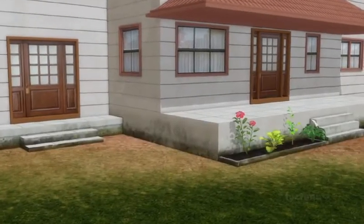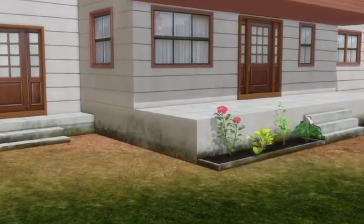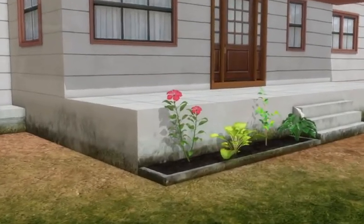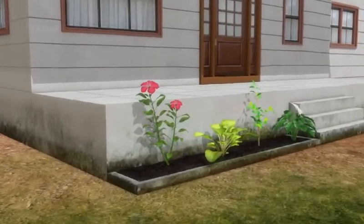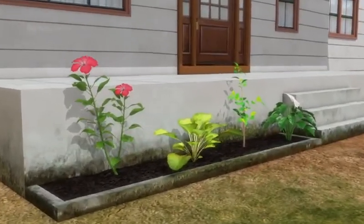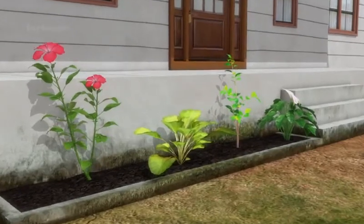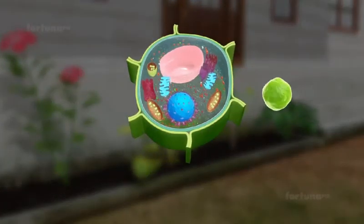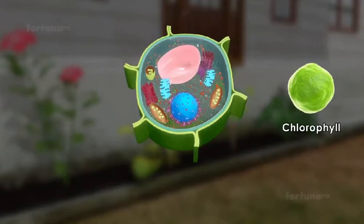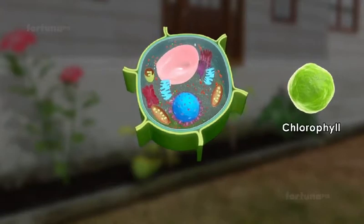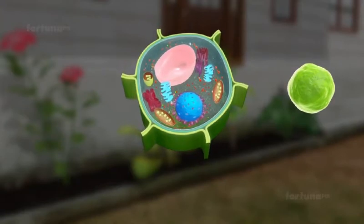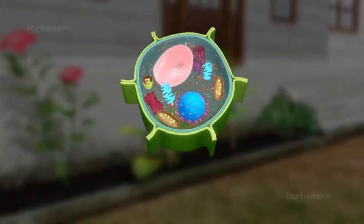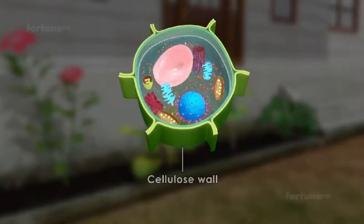Plants are multicellular organisms and photosynthetic autotrophs, which simply means they are capable of making their own food through the process of photosynthesis. Their cells contain a green pigment called chlorophyll, which helps absorb light during photosynthesis. Around these cells, plants have a characteristic cellulose wall.